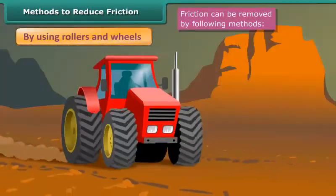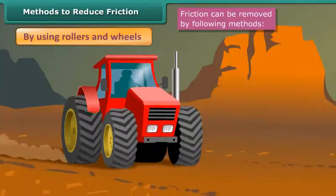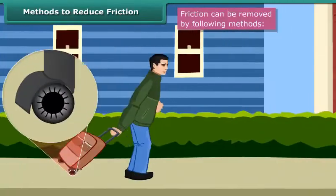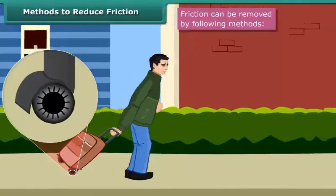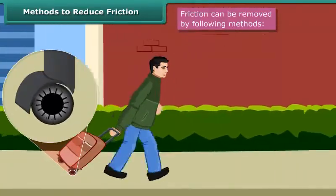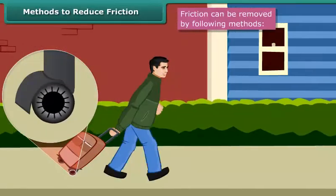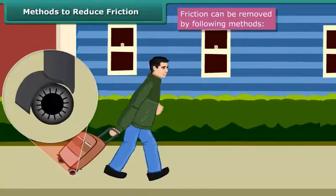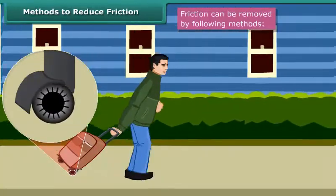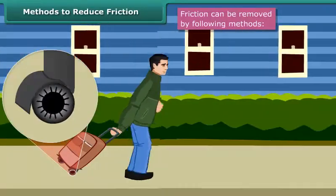By using rollers and wheels. Many heavy objects like big suitcases are provided with small wheels called rollers to reduce friction, so that they can be carried easily by pulling.